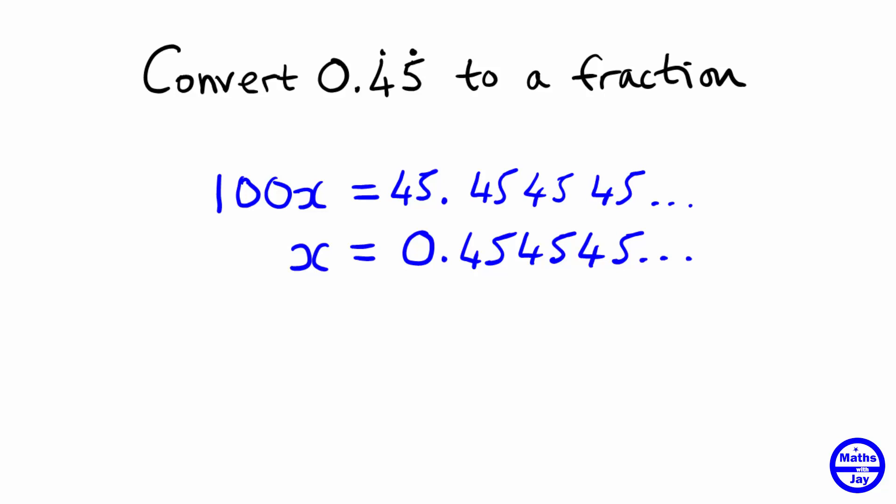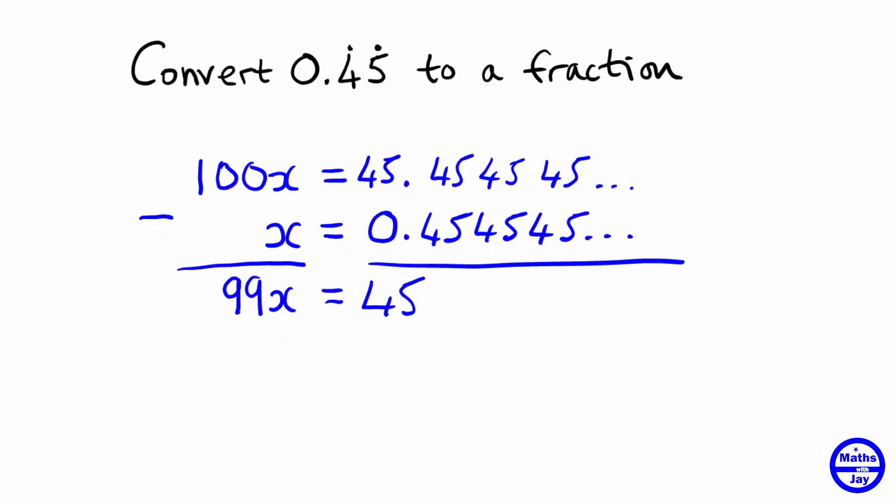And here's the trick. We're going to subtract the bottom line from the top line. So we're going to work out 100x minus x, so that's going to be 99x. And now you can see that on the right hand side, when we do the subtraction, the 0.45 recurring is going to just disappear because we're going to get 45 minus 0, leaving us with 45, and the rest of it just cancels out.